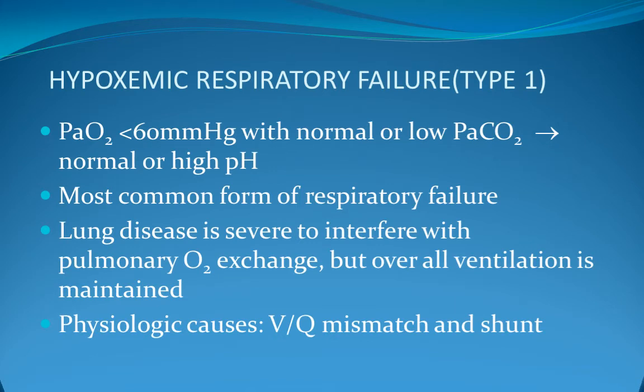Type 1 respiratory failure is when PO2 is less than 60 mmHg or less than 8 kPa, with low or normal pCO2 and normal or high pH. It is the most common form of respiratory failure, where lung disease is severe enough to interfere with pulmonary oxygen exchange but overall ventilation is maintained. Physiologic causes include VQ mismatch and shunt from pneumonia, pulmonary edema, PE, asthma, emphysema, fibrosing alveolitis, and ARDS.